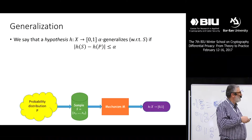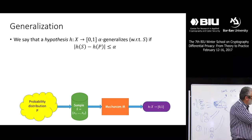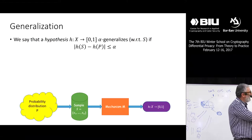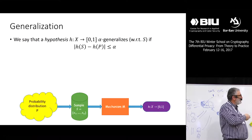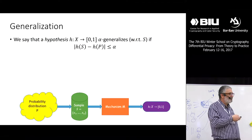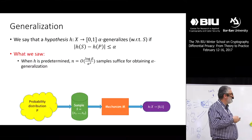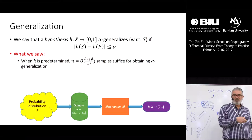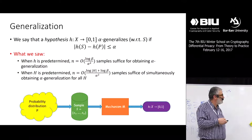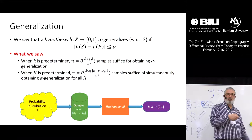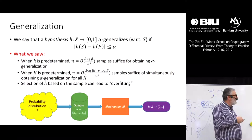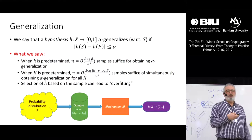We say that the hypothesis generalizes with parameter alpha — it's always with respect to the sample. We see the sample, we choose the hypothesis, and we ask whether the hypothesis generalizes. We say it generalizes if evaluating it on the sample and on the probability distribution gives a difference of at most alpha. When h is predetermined, the sample size can be small and we get good generalization. Similarly for a predetermined family, but if the selection of h is adaptive — based on the sample — we're maybe in trouble.